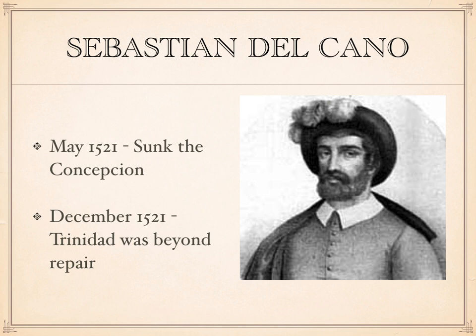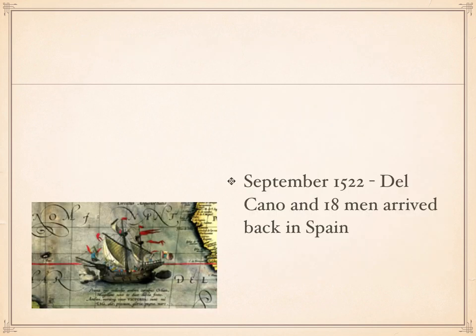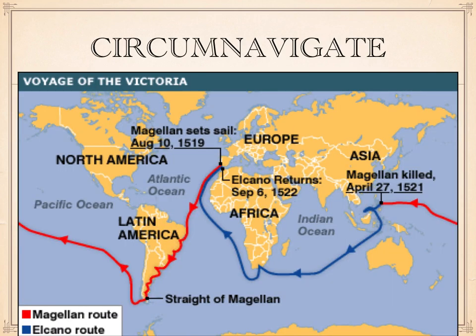By December they had reached the Maluku Islands, but the Trinidad — Magellan's flagship — was too damaged to keep sailing, so all the remaining sailors transferred to the Victoria. Finally, in September of 1522, three years after setting sail from Spain, Elcano and 18 men arrived back in Spain on the single surviving ship, the Victoria. They returned with a ship full of spices. These men were the first people to successfully circumnavigate — that is, sail around — the world, and the Victoria was the first ever ship to do so.